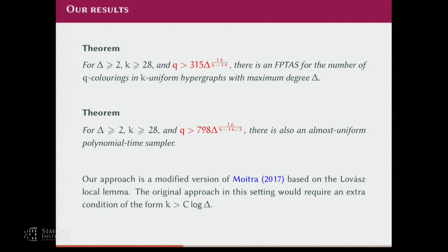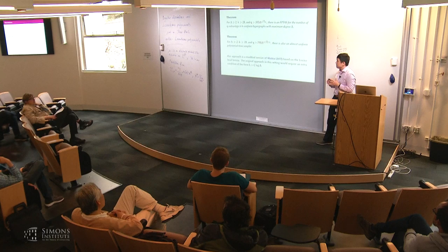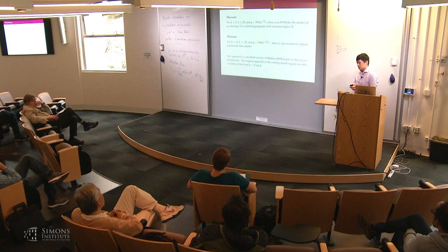Question: have you tried any of the other approaches? I haven't tried the zeros method. I tried writing the recursion for correlation decay, and it turns out to be quite complicated — you don't get as clean a recursion as in the graph case, so I don't know how to make other methods work.